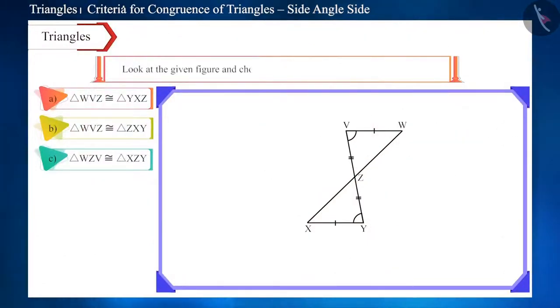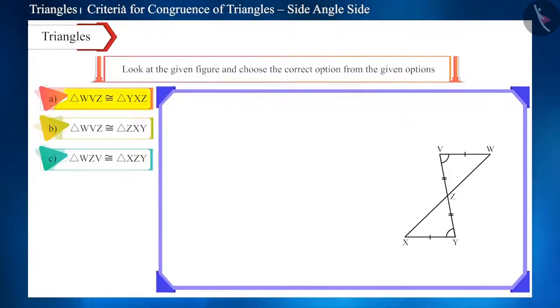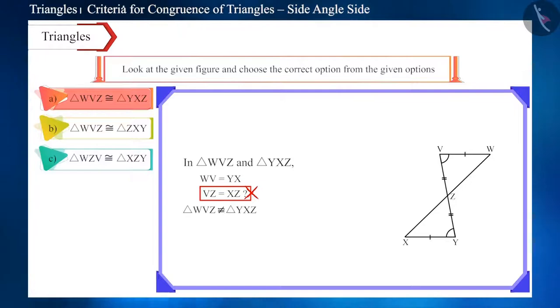Look at the figure and choose the correct option of congruent triangles. Friends, according to the first option here, side WV is equal to side YX. Look in the figure and tell whether it is correct. Yes. Now, can you tell whether side VZ is equal to side XZ? No. Therefore, these triangles cannot be congruent. So, the first option is not correct.